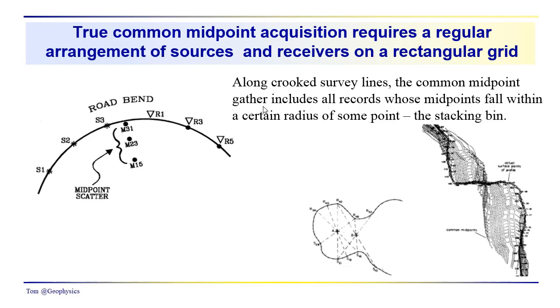The common midpoint acquisition that we've been talking about seems fairly simple, but I think you can see if you're collecting data on a road and you have a bend in the road, that for source 3, receiver 1, we've got a midpoint here.